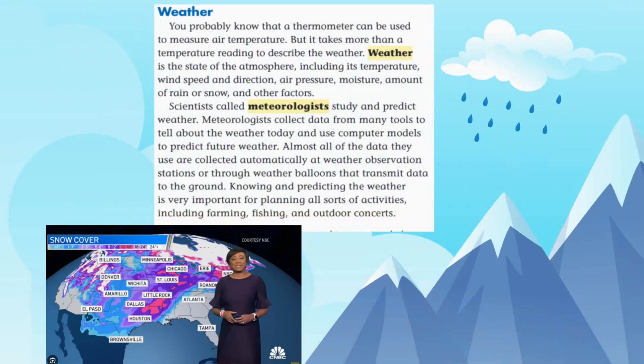What is weather? You probably know that a thermometer can be used to measure air temperature, but it takes more than a temperature reading to describe the weather. Weather is the state of the atmosphere, including its temperature, wind speed and direction, air pressure, moisture, amount of rain or snow, and other factors.